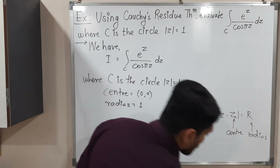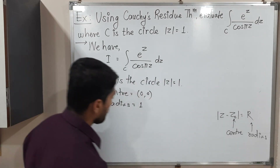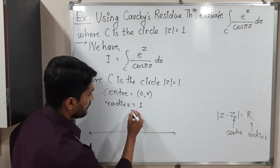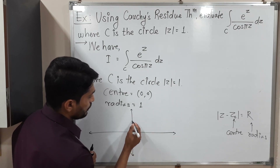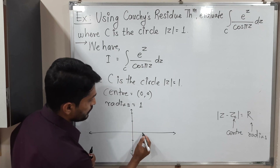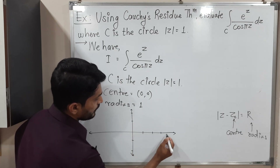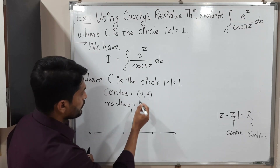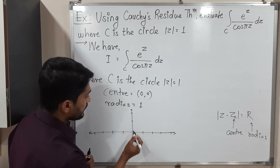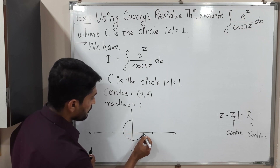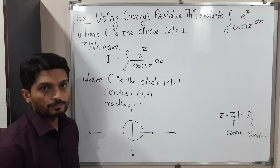If we compare the right hand side, R equals 1. So the radius is 1. That means the given circle has center (0, 0) and radius 1. Let us draw the circle on the complex plane with real and imaginary axes. With radius 1 and center (0, 0) we get a circle like this. This is the given curve.